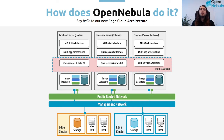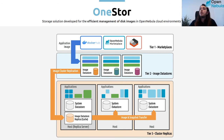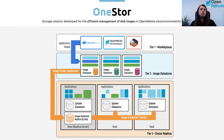Alongside this edge cluster architecture we developed the OneStore solution. This solution was implemented to meet two key requirements. First, to improve performance — since storage is local to the host. Second, to reduce deployment time. The first time you deploy a VM it takes a bit longer as the image needs to be copied from the front-end to the host. But subsequent deployments are much faster because the image is copied from the replica host to the host, not from the front-end.